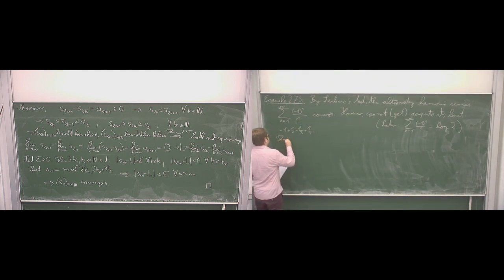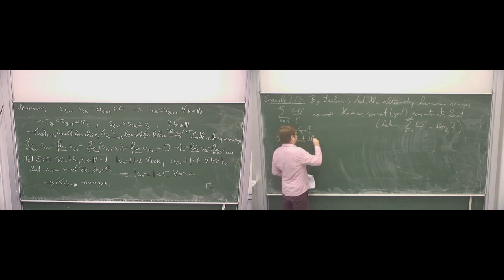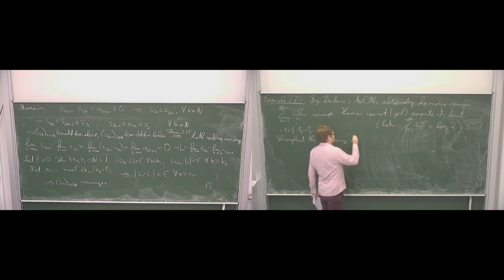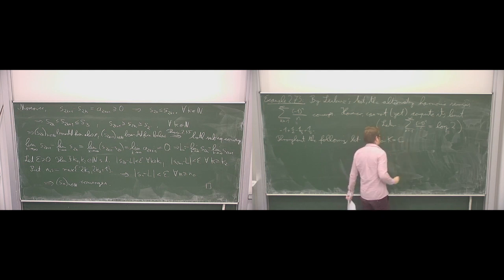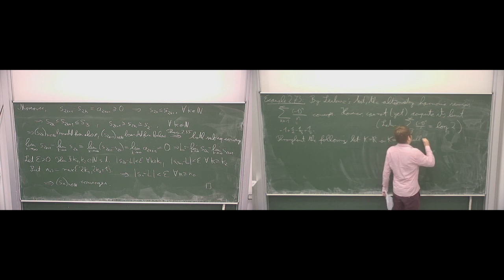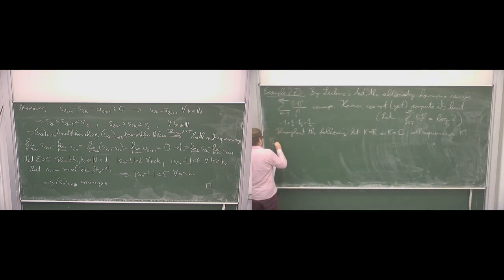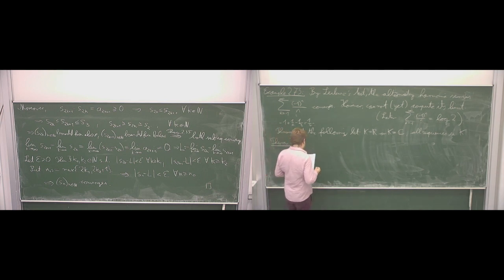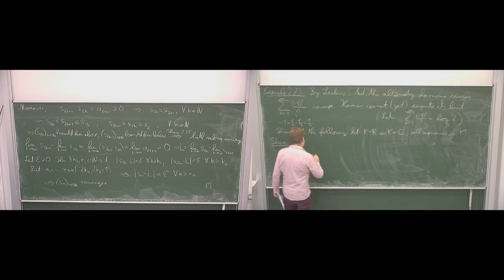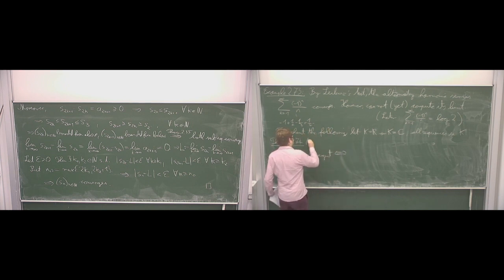Throughout the following, in the rest of this section, we decide to work in the real or complex numbers. We can always choose the complex numbers since the real numbers are included. All sequences will be sequences in this field, so I won't have to repeat this again. One more convergence test: a series in K, sum from n equals 1 to infinity of a_n, is convergent if and only if a certain condition holds. This is Cauchy's convergence test.